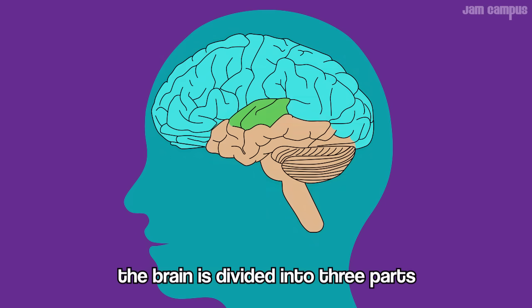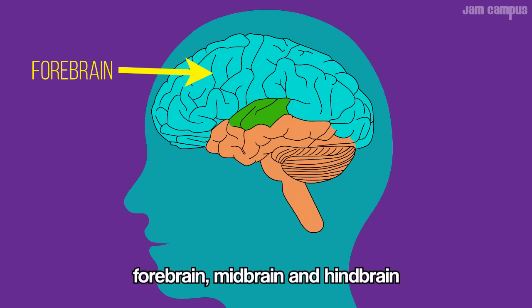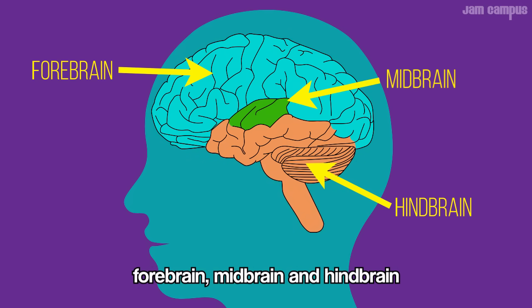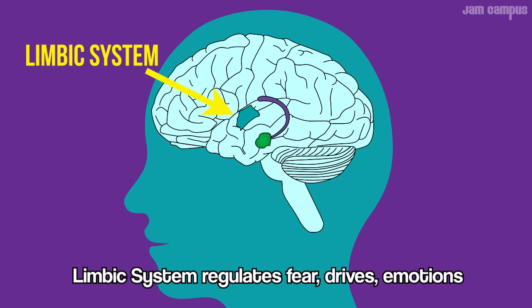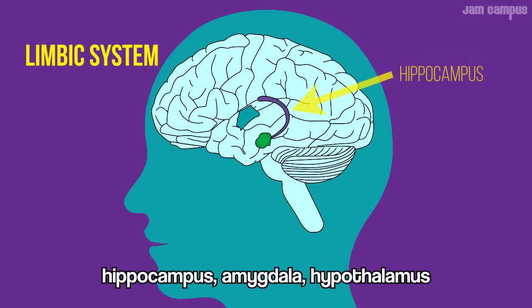The brain's divided into three parts: hind brain, main brain, and high brain. The limbic system is a sensory switchboard that regulates sleep and wake cycles, and regulates fear, drives, and emotions.